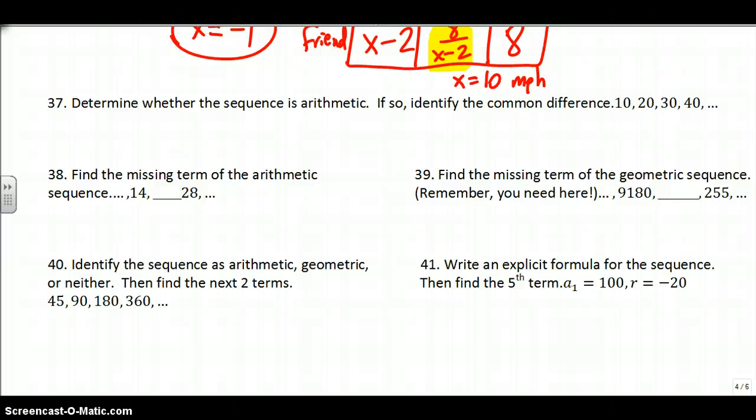37, determine whether the sequence is arithmetic. Arithmetic means that you have to be adding the same amount or subtracting the same amount every time. How do I get from 10 to 20? I'm adding 10. From 20 to 30? Adding 10. 30 to 40? Adding 10, which means yes, arithmetic. If it is, identify the common difference. We call that D - it's whatever I'm adding every time, which is 10.